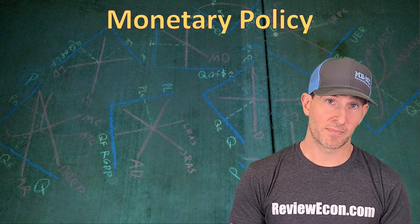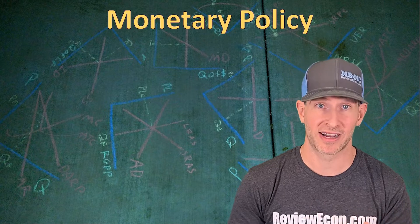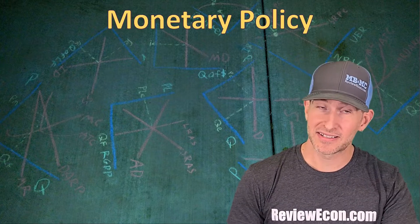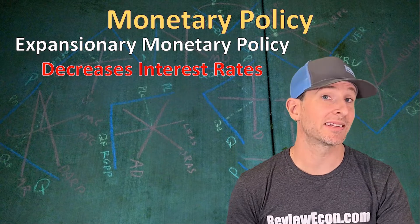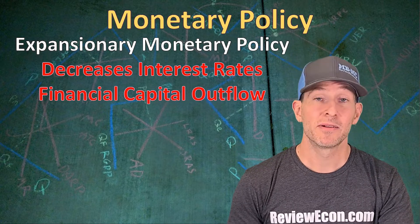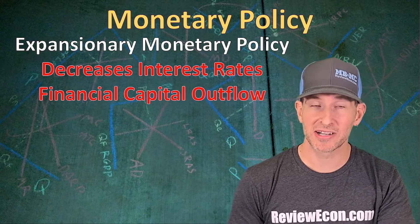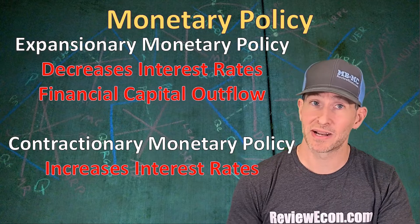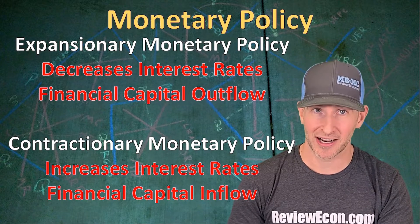Now we're going to talk about how monetary policy can impact interest rates, and with that, where foreign investors put their financial assets, impacting capital inflows and outflows and exchange rates. Expansionary monetary policy will cause a decrease in the interest rate, resulting in a financial capital outflow as foreign investors seek higher interest rates elsewhere. Contractionary monetary policy decreases the money supply, causing an increase in interest rates, resulting in a capital inflow as foreign investors seek those higher interest rates.